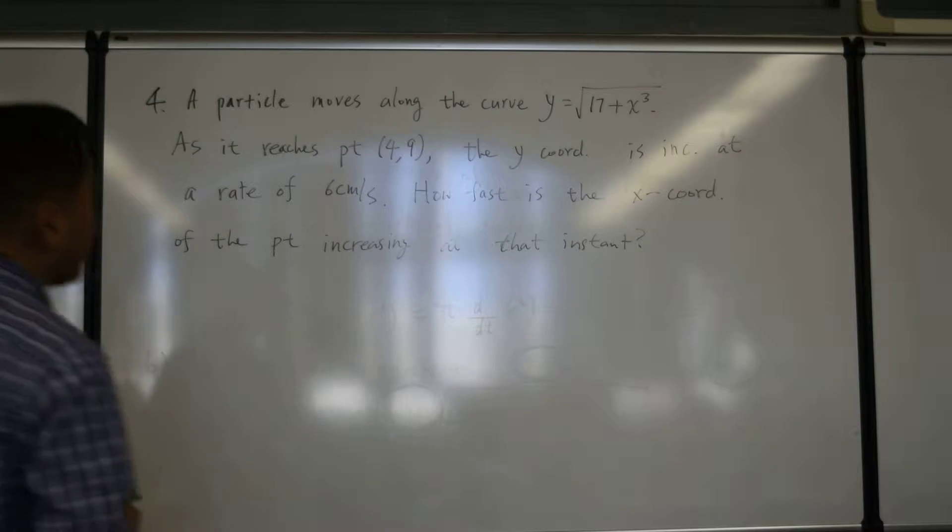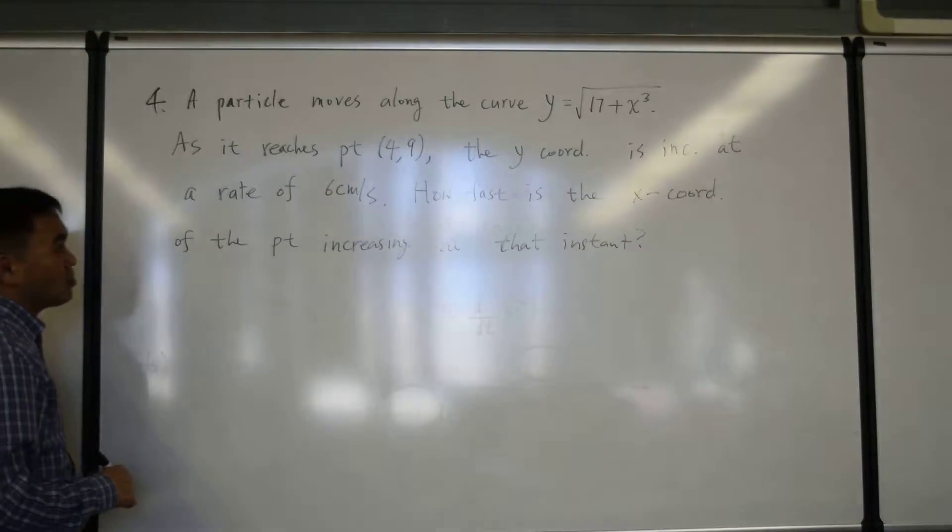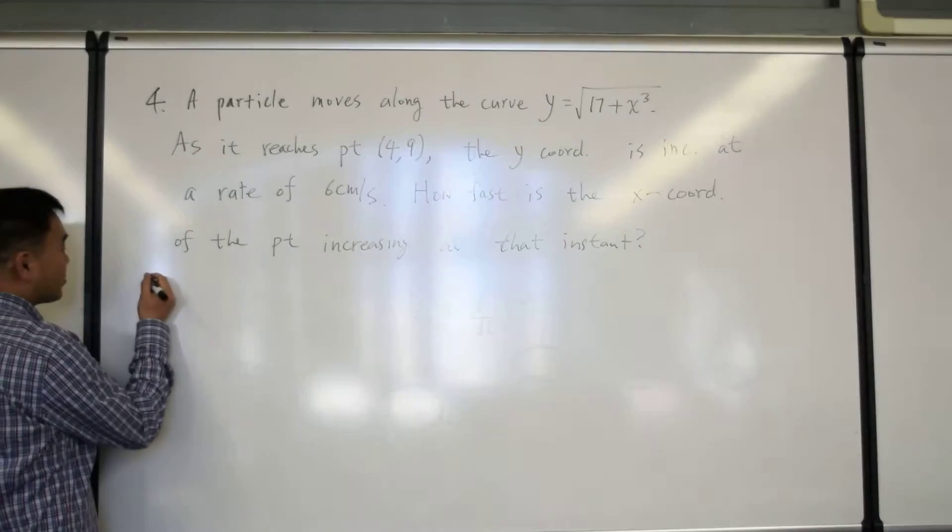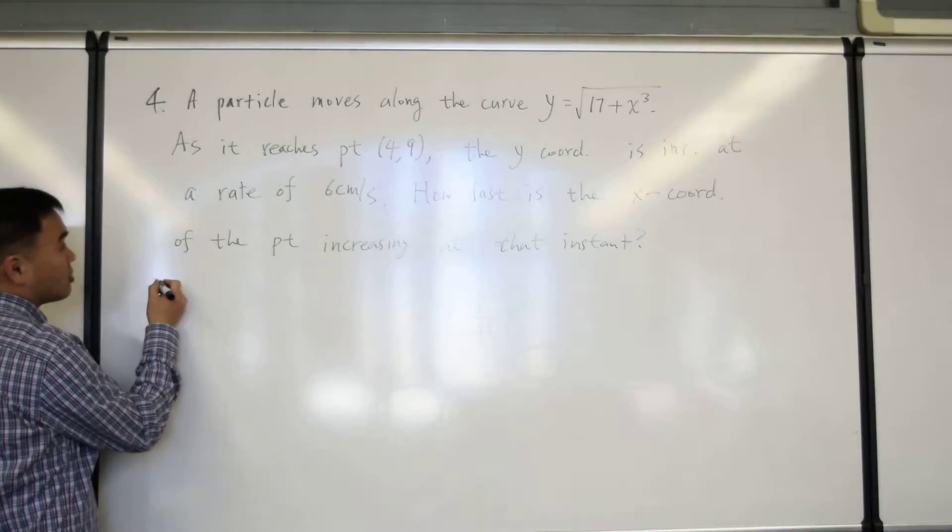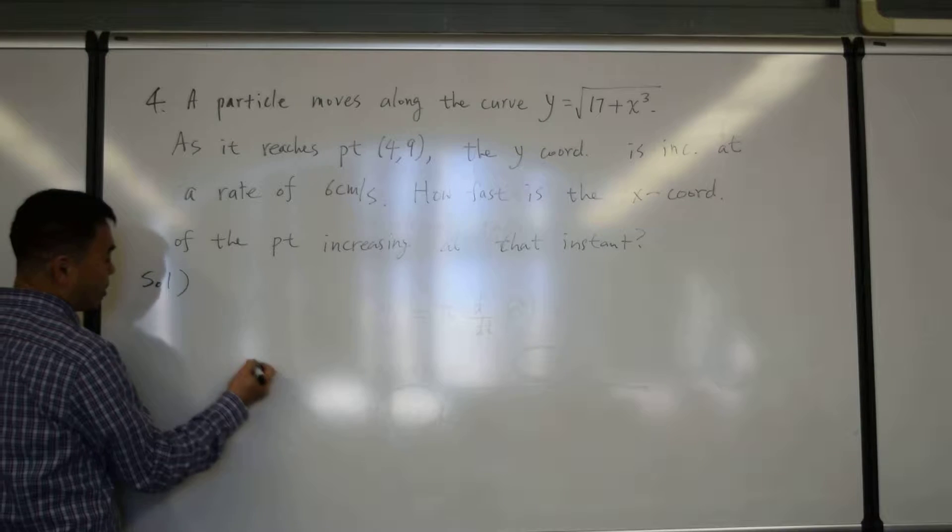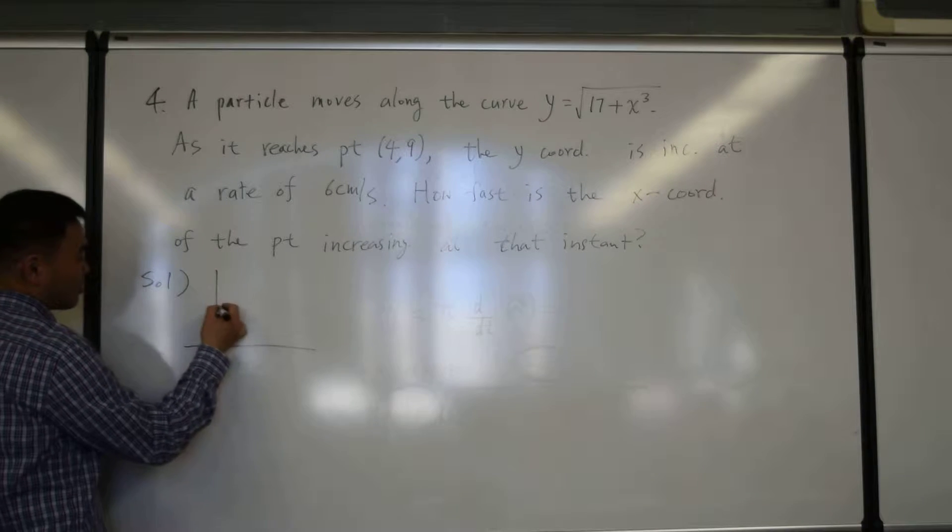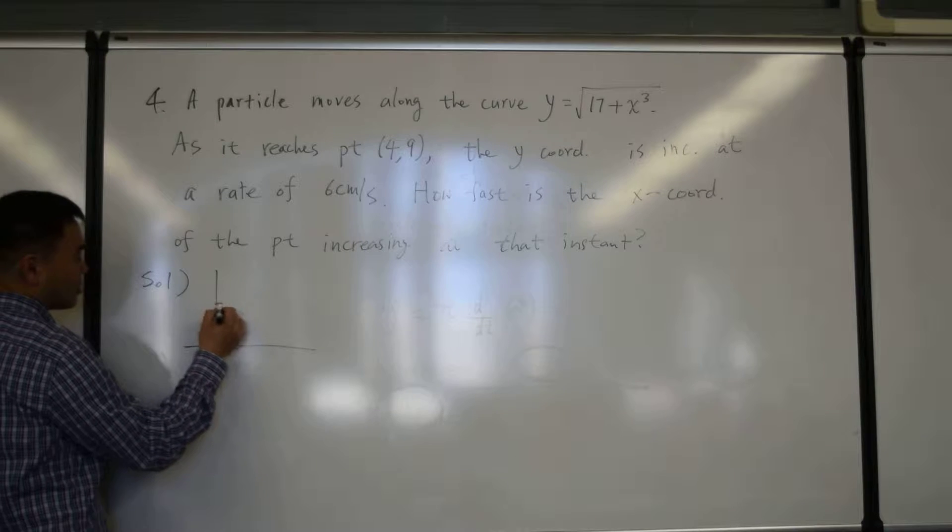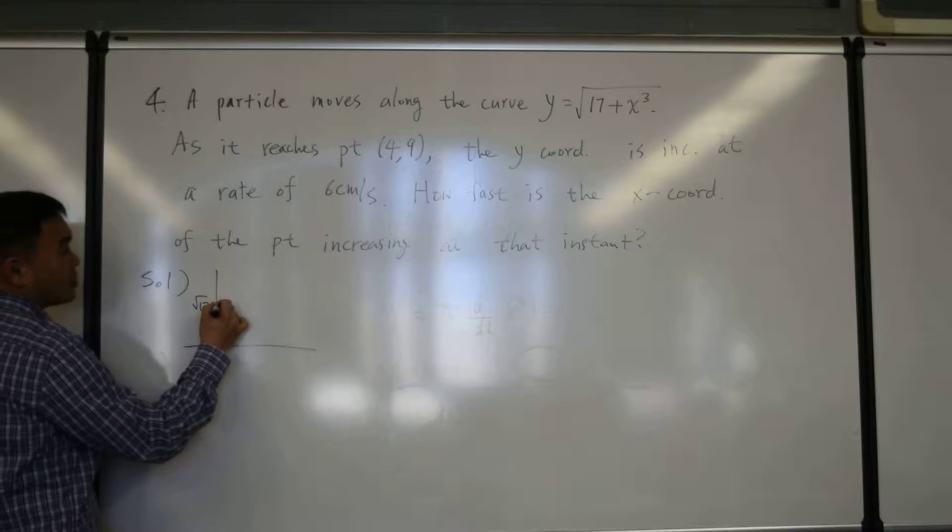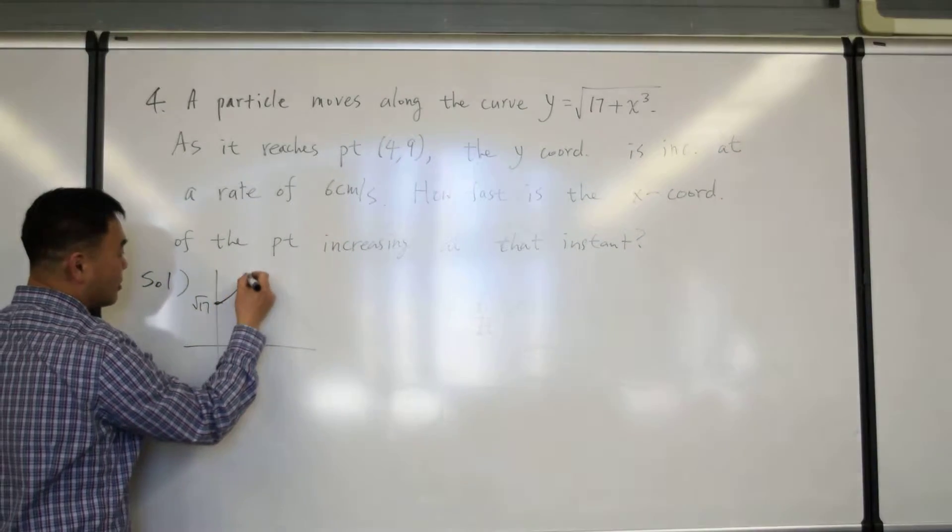A particle moves along the curve y equals square root of 17 plus x cubed. I have no idea what that curve looks like, but I guess it's something like square root of 17 is slightly more than 4. So let's just say this is root of 17 and it's increasing as x increases, so it's kind of like that way.